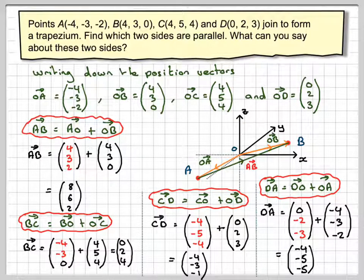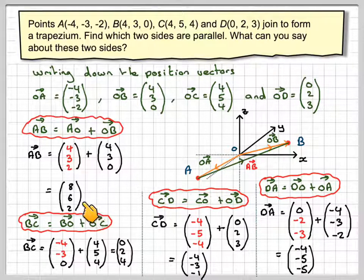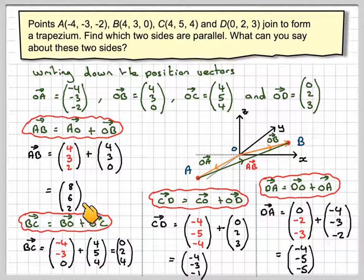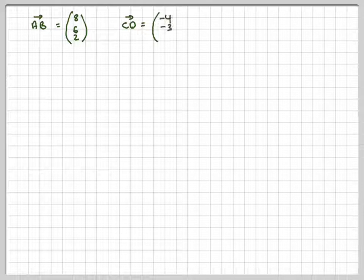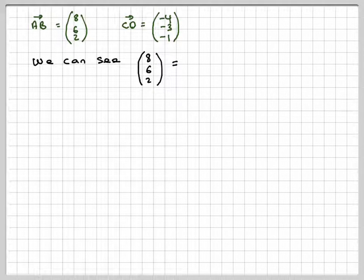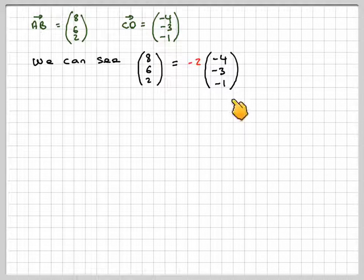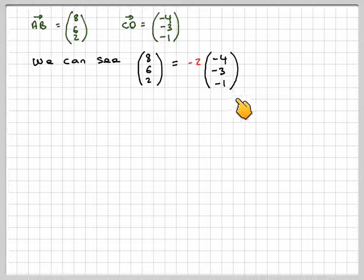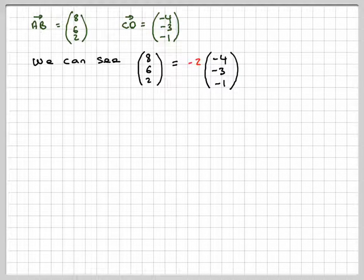Now, we need to look at these. And if we look at this one here and this one here closely, we'll see that this one is minus 2 times this one. Or, looking the other way around, this one is minus 1 half times this one. It doesn't matter which way you say it. So these two here, because we've got that process, AB and CD, and we can say that (8, 6, 2) is minus 2 times (-4, -3, -1), then these two vectors, AB and CD, are parallel, because one is just a multiple of the other.